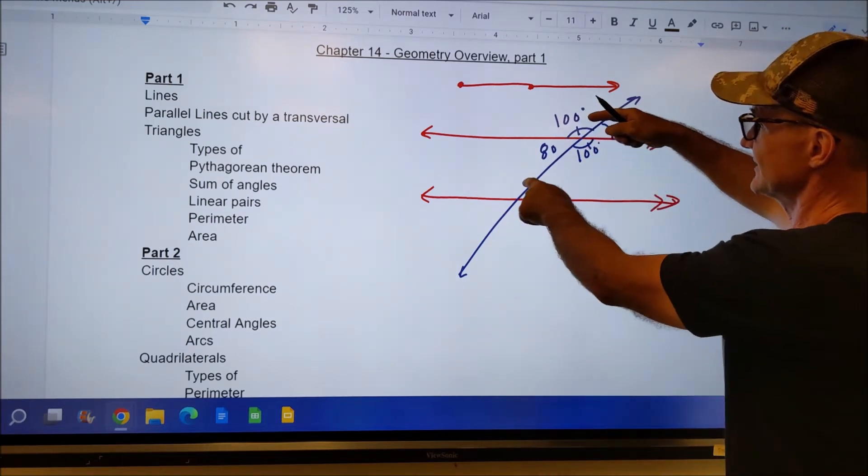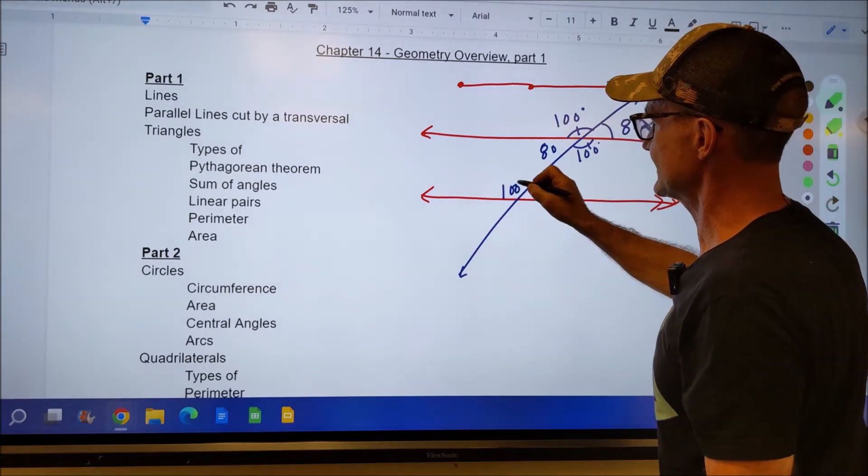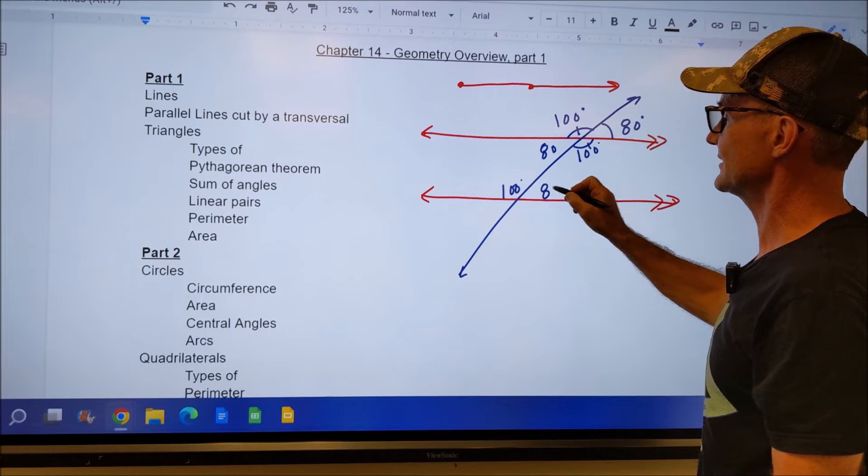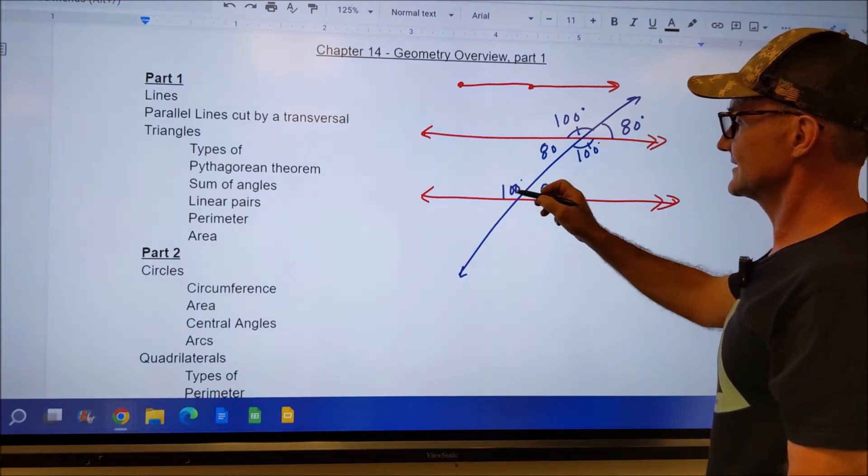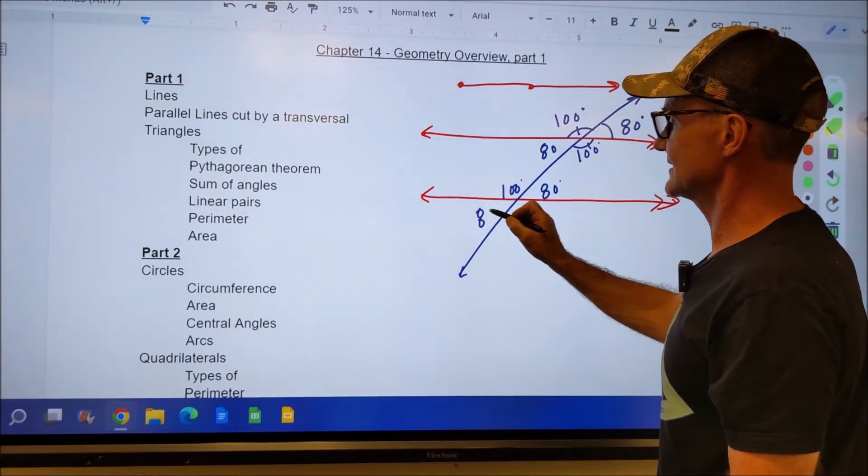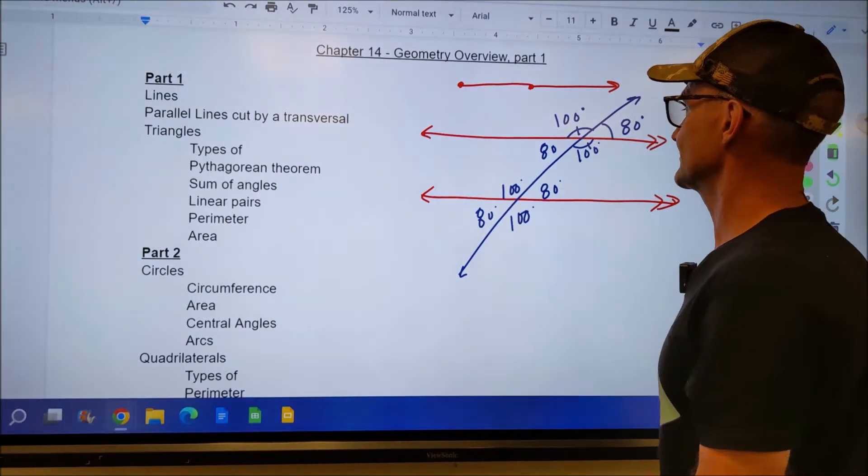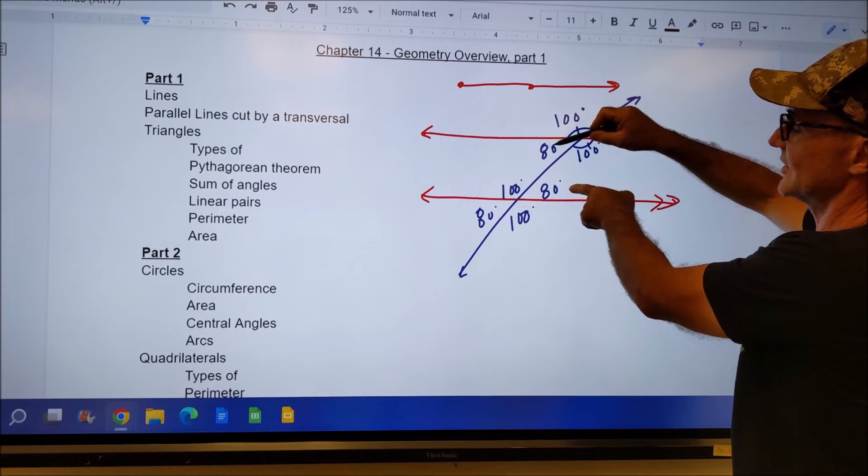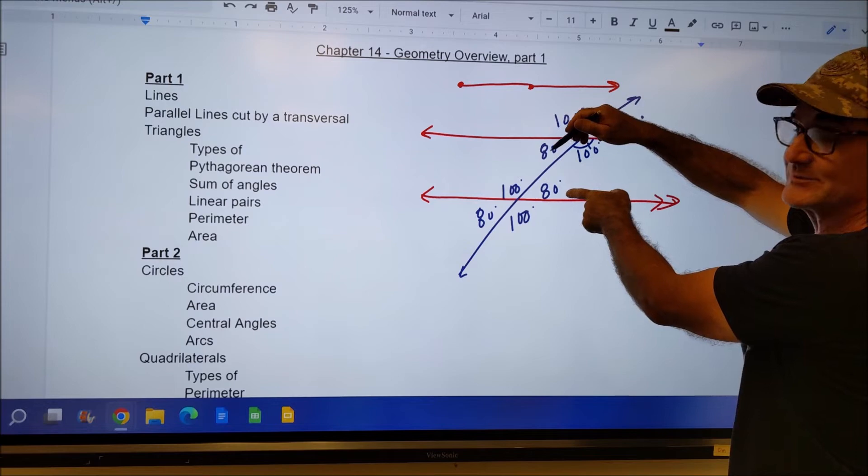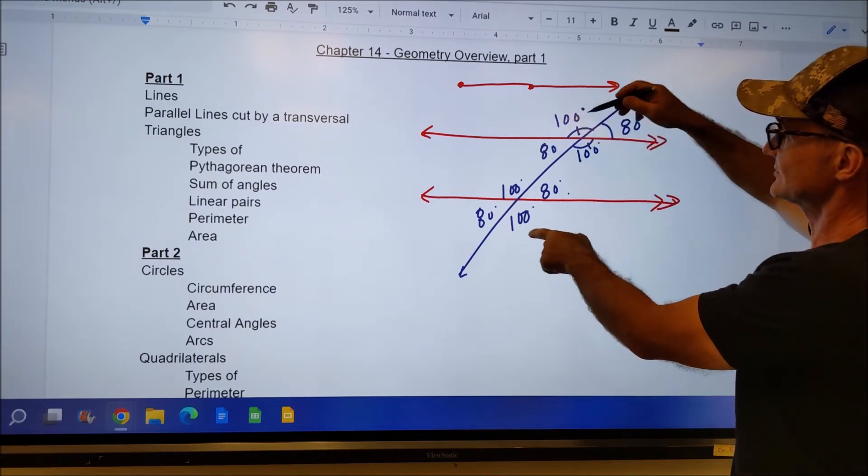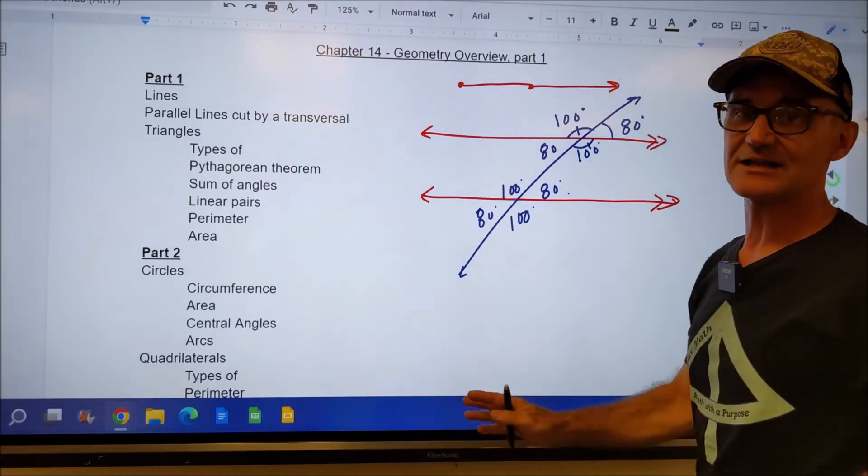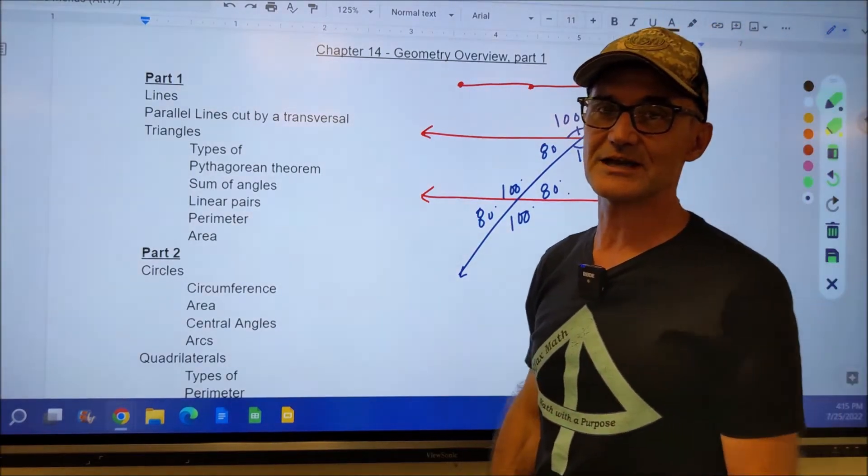These are called corresponding angles. These would be the same. If I know this one, then I know this one is linear pair is 80. This one is its vertical angle, 100. If this is 80, this is 80. Also verticals. These are sometimes called alternate, meaning opposite sides of the line, interior, because they're inside the parallel lines, angles. These are alternate exterior angles. A lot of this math is really just the vocabulary.